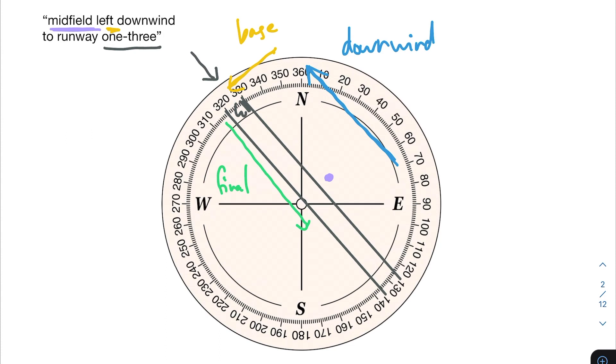Left corresponds with the direction in which we had to turn when we were going downwind. So since we're turning left to get onto the runway, we know that our downwind is going to be on this direction as opposed to here. So if this was midfield right, our downwind would be to the right of our runway. Since it's left, it's going to be on the left. Downwind corresponds to where the airplane is at that moment. So our airplane is here right now.